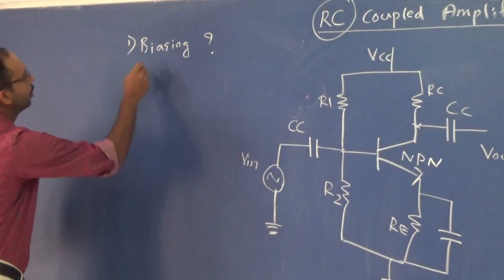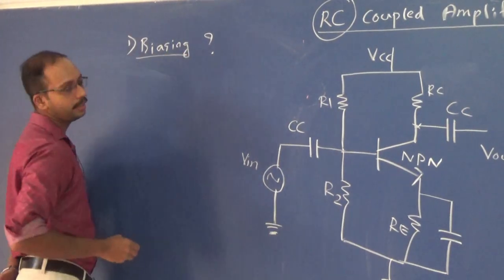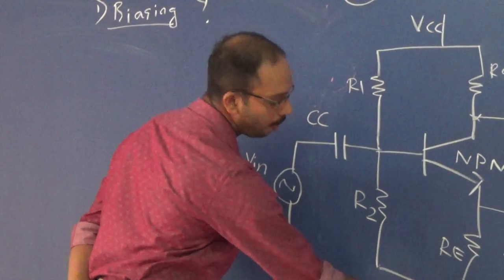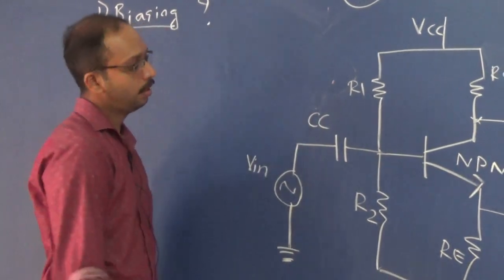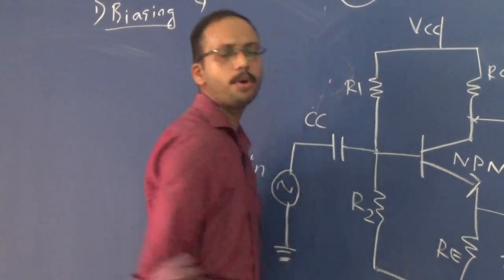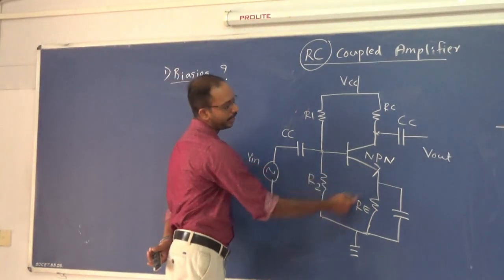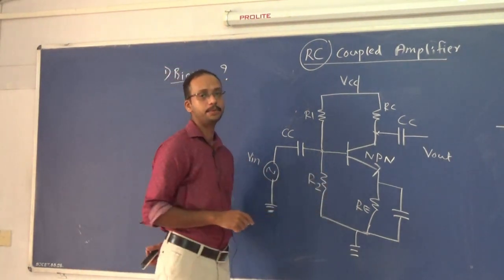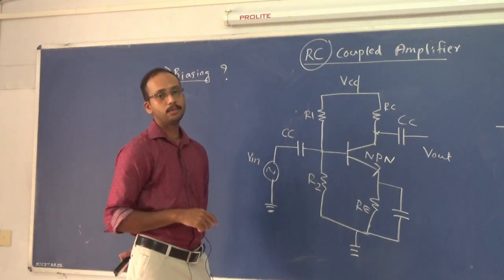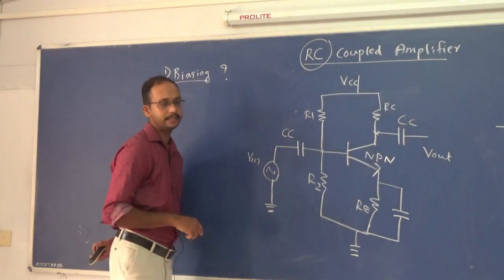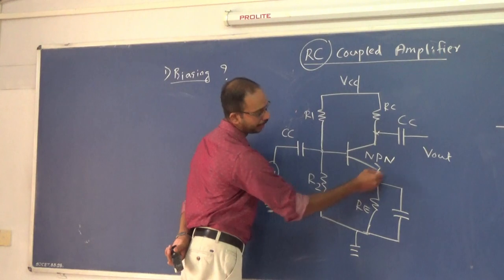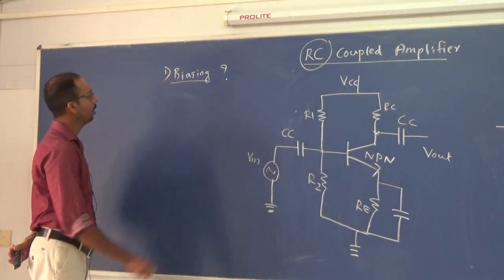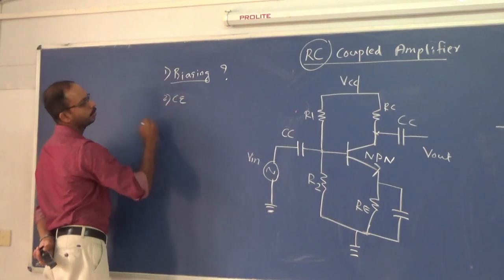We covered the need for biasing, and we can see that common emitter configuration is used here. This configuration gives better results — it provides good current gain and good voltage gain. That is the reason behind using common emitter configuration.